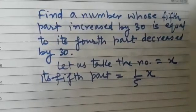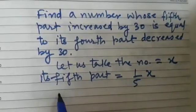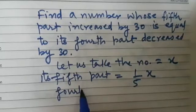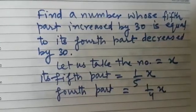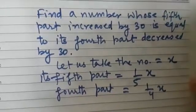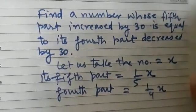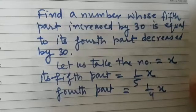Now what will be its fourth part? So its fourth part will be equal to 1 by 4x. Now a relationship is given between these two. So what is that? It says fifth part increased by 30.